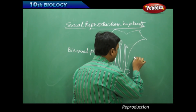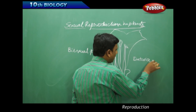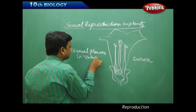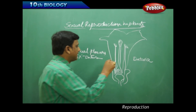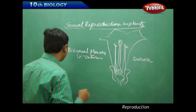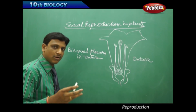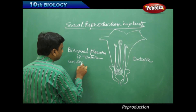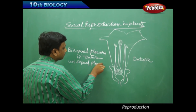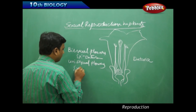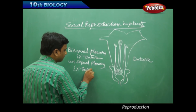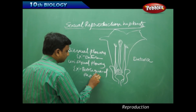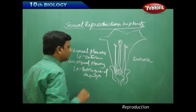The diagram shown here is of a plant called datura, which is bisexual — it has both male and female reproductive parts. Flowers that have either only male or only female reproductive organs are called unisexual. Examples of unisexual flowers include bottle gourd and papaya.